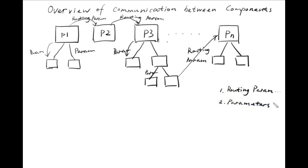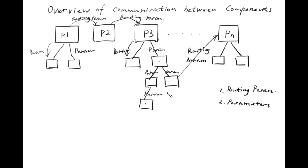The third type of parameters are cascading value parameters. In that case, we have a deeper tree structure like page 3, and sometimes we want to pass the value down from the parent page component all the way to the leaf — all the way to all of them. We can do that using regular parameters, but Blazor has a better way to do that. It's called cascading parameters.